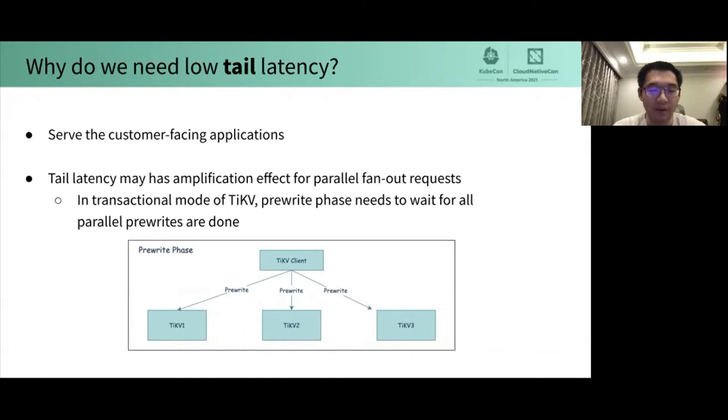Furthermore, the slow events may not have low probability, because tail latency may have amplification effects for parallel fan-out requests. For instance, in the transaction model of TiKV, the pre-write phase needs to wait for all parallel pre-writes to be done. So the latency of pre-write phase is the maximum latency of all pre-writes.